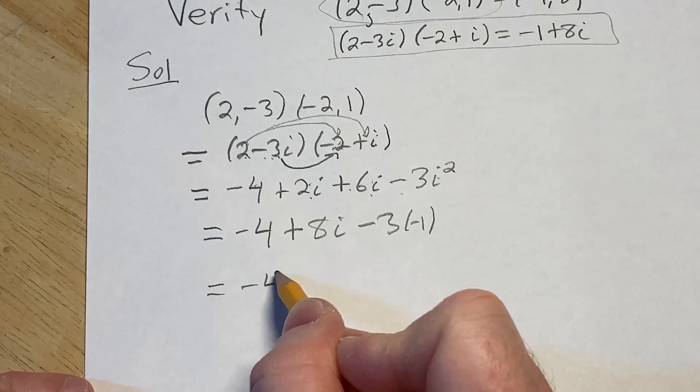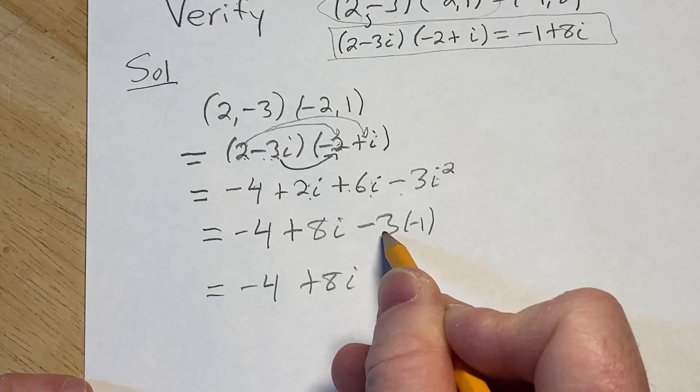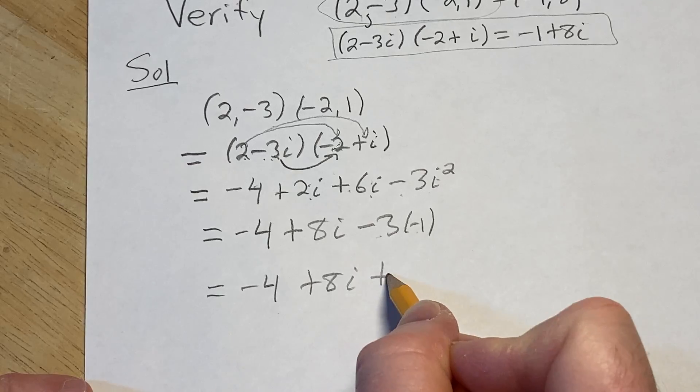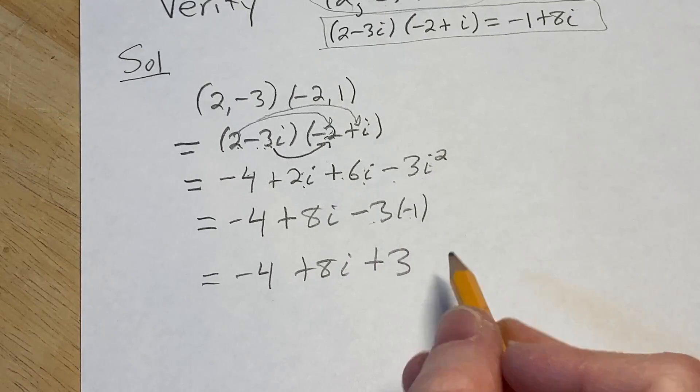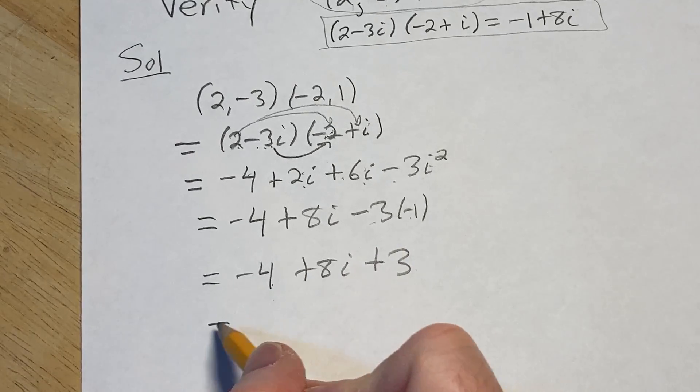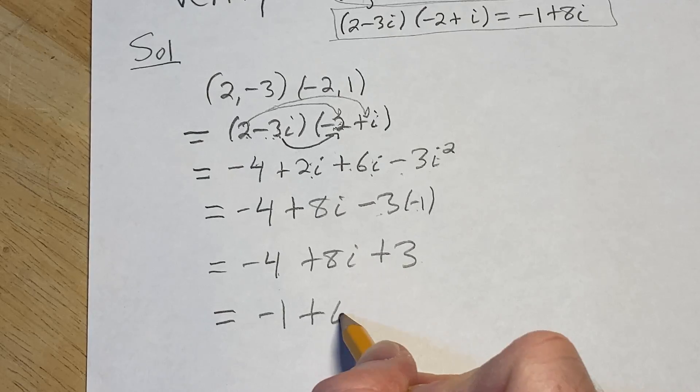This is negative 4 plus 8i, and this is going to be a positive 3, because negative and negative is positive. Negative 4 plus 3 is going to give us negative 1 plus 8i.